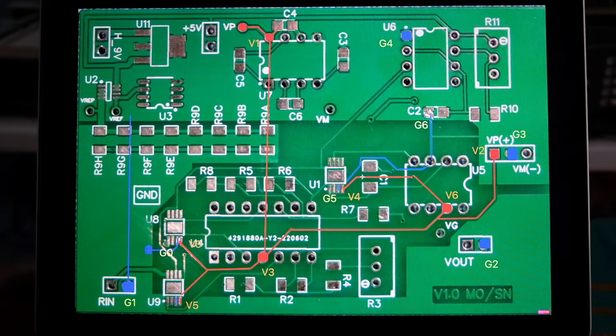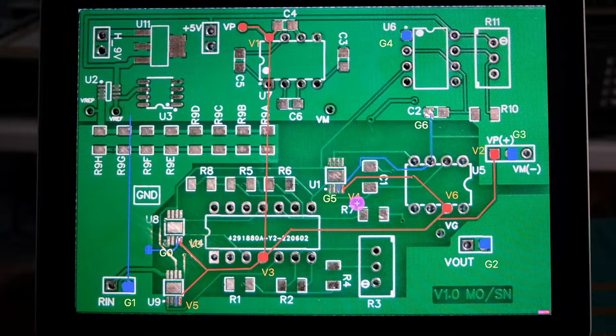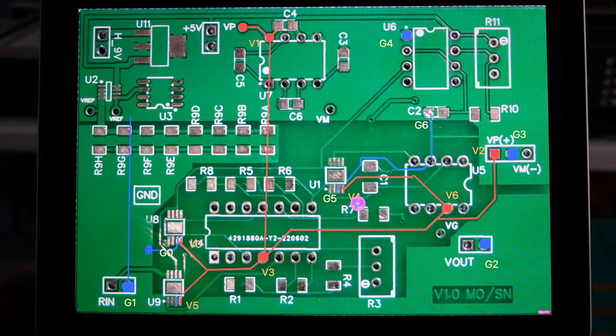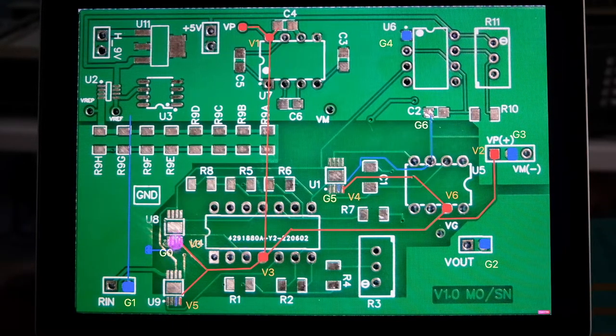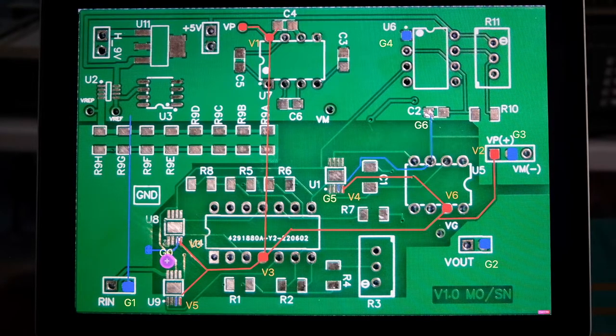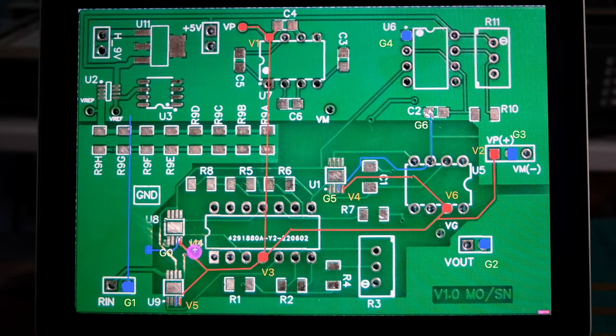So here's a close-up view of the PCB I'm trying to find the short in. The short actually is over here. I'm calling it ground zero, so G0 and V0.